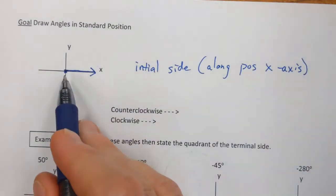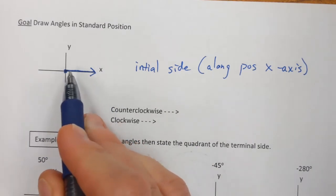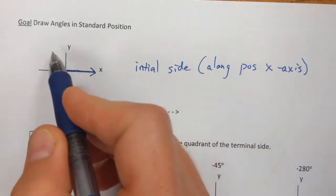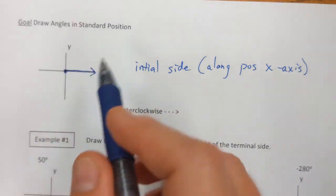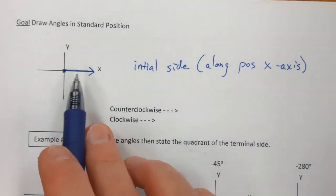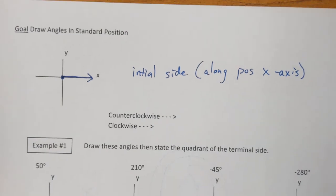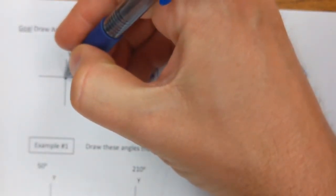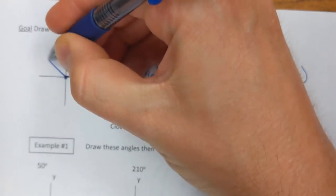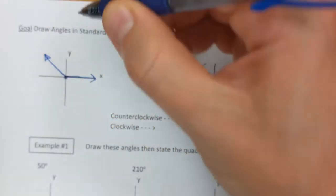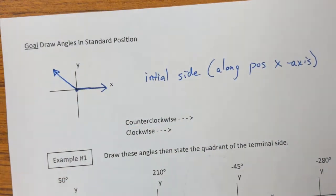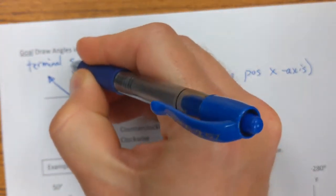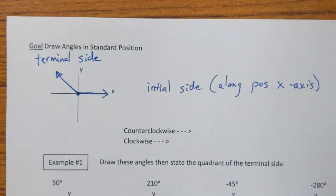So in standard position, our first ray is always going to go right here. You can draw it in a non-standard position where that first side can be anywhere, but in standard position this is what we're looking at. When we go to draw an angle, we're also going to need to draw a second side or second ray. This second ray is called the terminal side of the angle.